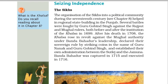Seizing Independence: The Sikhs. The organization of the Sikhs into a political community during the 17th century helped in regional state building in the Punjab. Several battles were fought by Guru Gobind Singh against the Rajput and Mughal rulers, both before and after the institution of the Khalsa in 1699. After his death in 1708, the Khalsa rose in revolt against the Mughal authority under Banda Bahadur's leadership, declared their sovereign rule by striking coins in the name of Guru Nanak and Guru Gobind Singh, and established their own administration between the Satluj and the Jamuna. Banda Bahadur was captured in 1715 and executed in 1716.